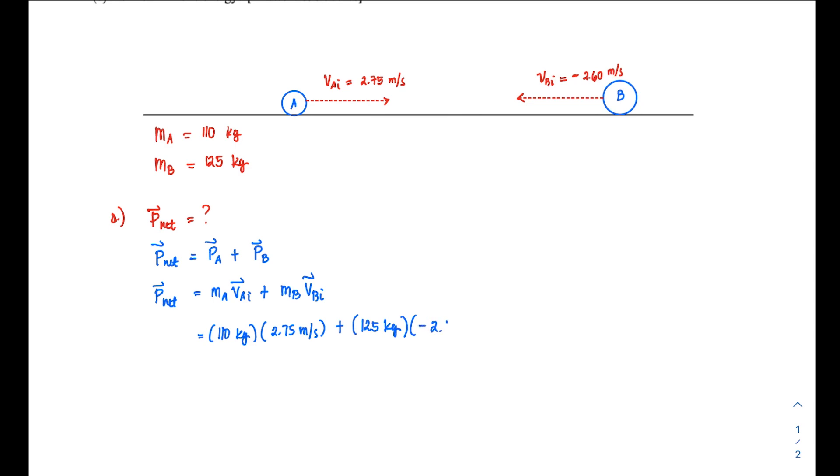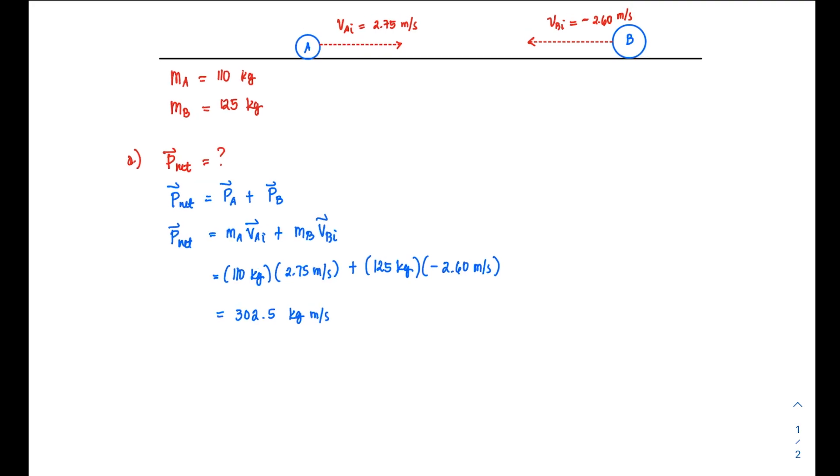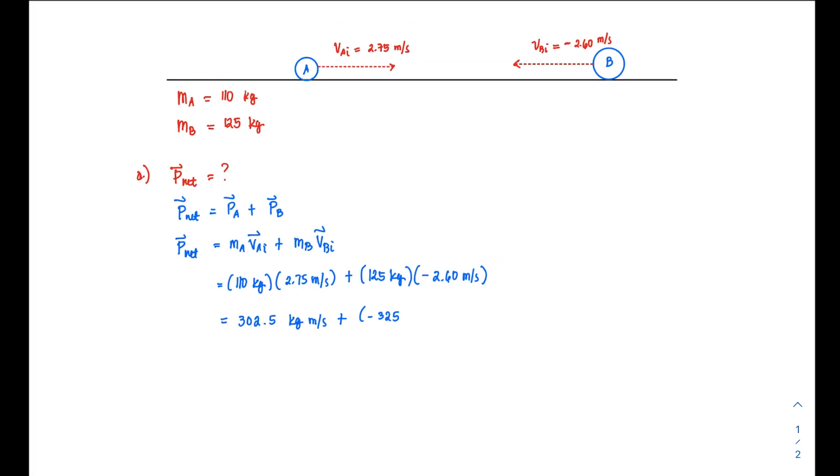2.60 m/s. From there, just evaluate the terms. The first term gives 302.5 kg⋅m/s—nothing special, no special unit for momentum. As I've said, it's like the least favorite child with no special name.